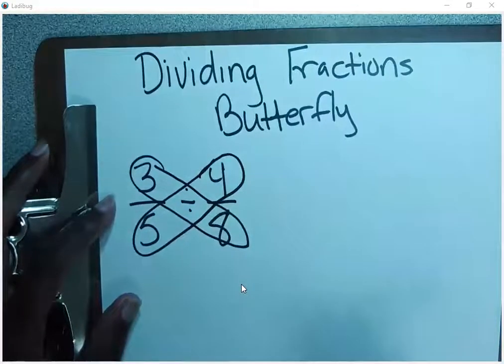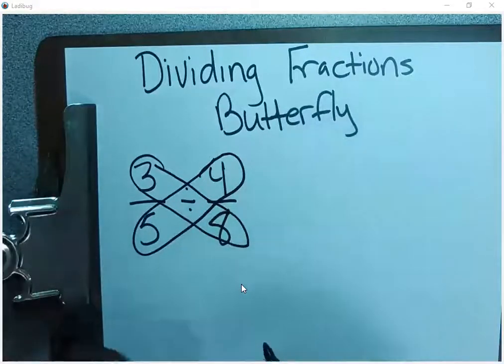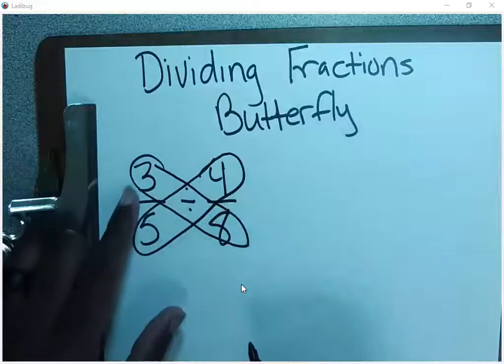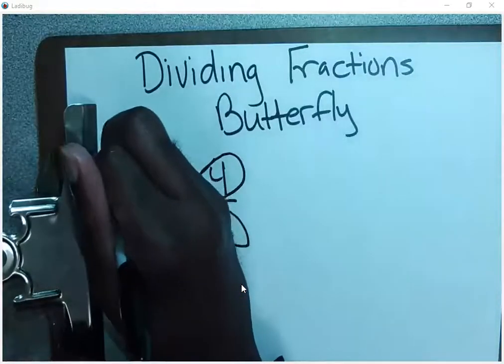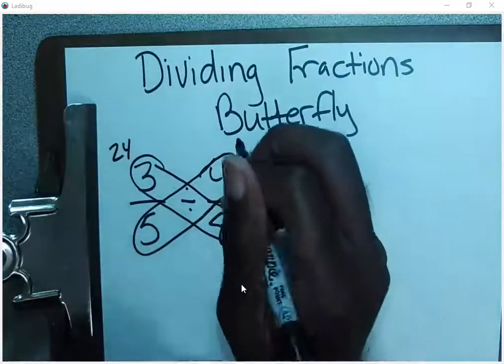Reason why it's called the butterfly method, because once you draw it, it looks like a butterfly or a butterfly bandage. So now we got three times eight, which is 24, and then we have five times four, which is 20.